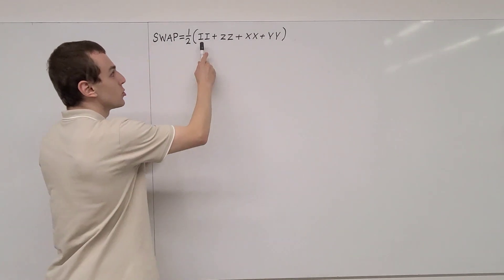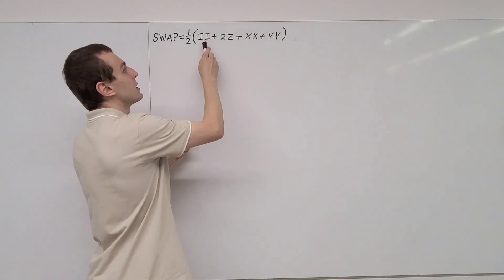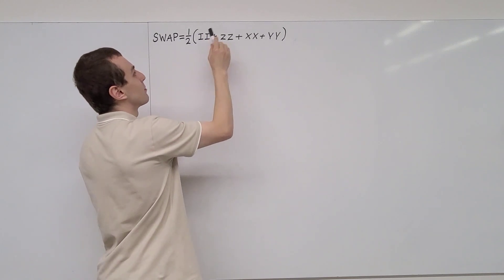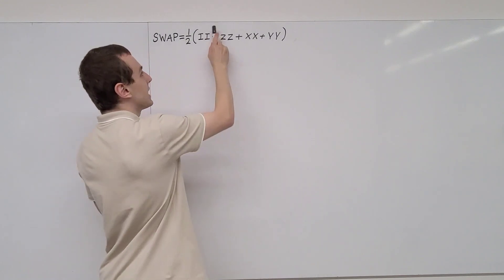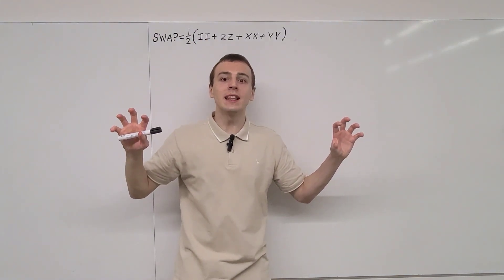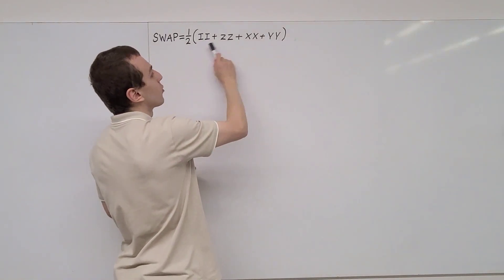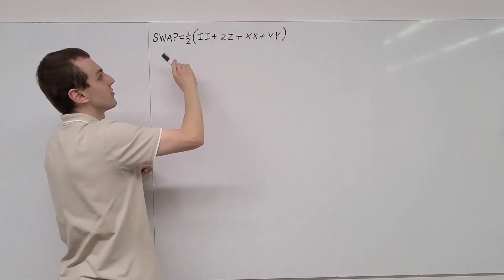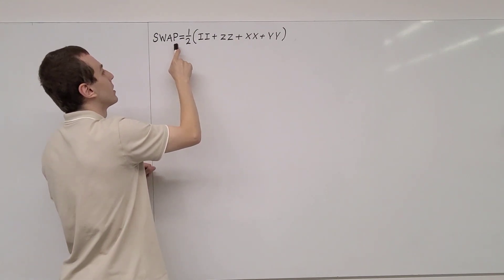By writing two of them next to each other, we're not saying that we're going to multiply them — we are implying that we're going to take the tensor product, with an implied tensor product symbol between each of the letters. When we take the tensor product, we take two-by-two matrices and combine them into a four-by-four matrix. So all four of these terms are four-by-four matrices, and when we take this linear combination and evaluate the sum, we get the matrix representation of the swap gate.